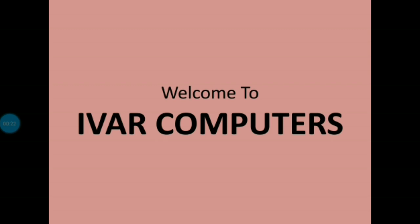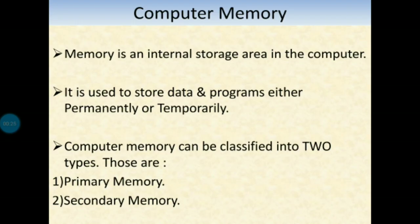What is computer memory? How many types? Memory is used to store information internally in the computer. It is used to store the information either permanently or temporarily. Computer memory can be classified into two types.